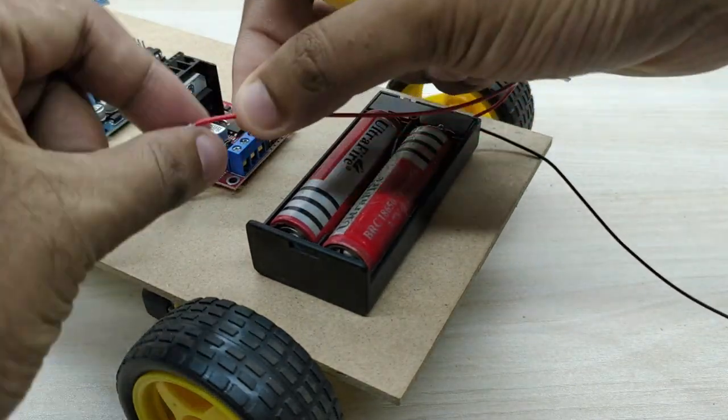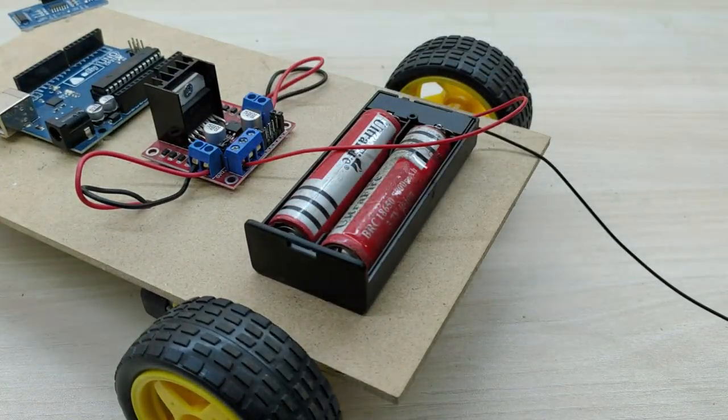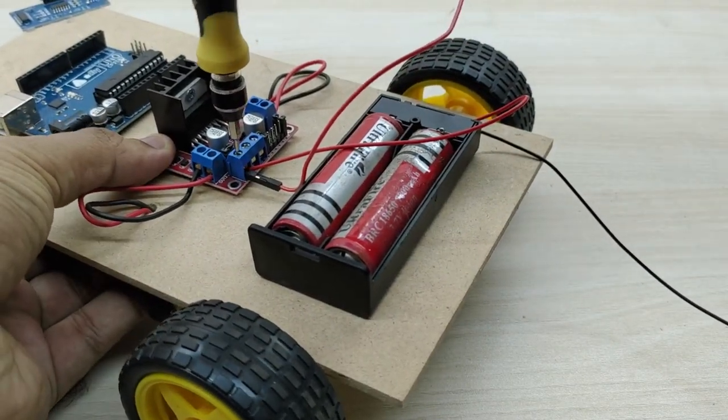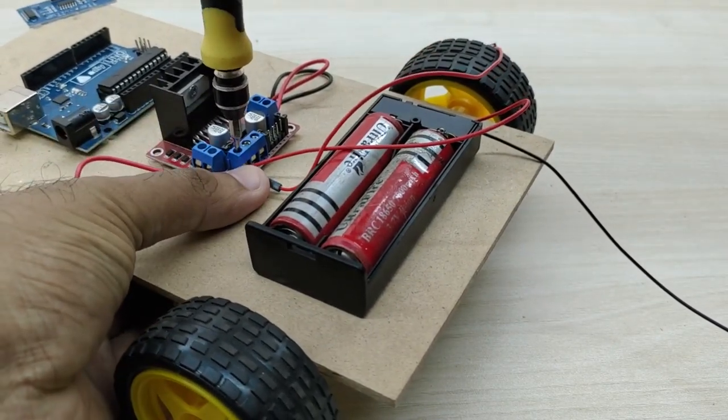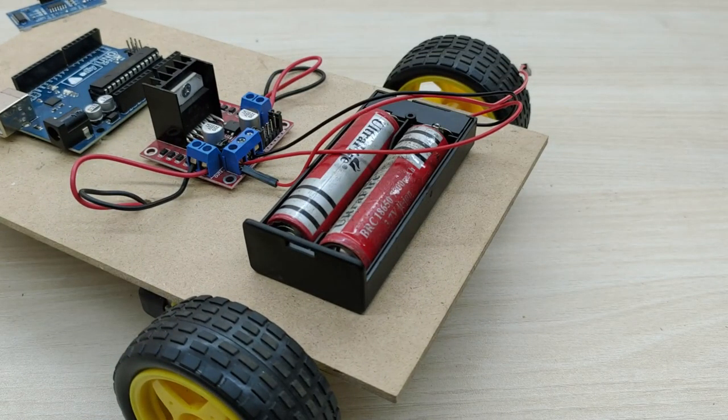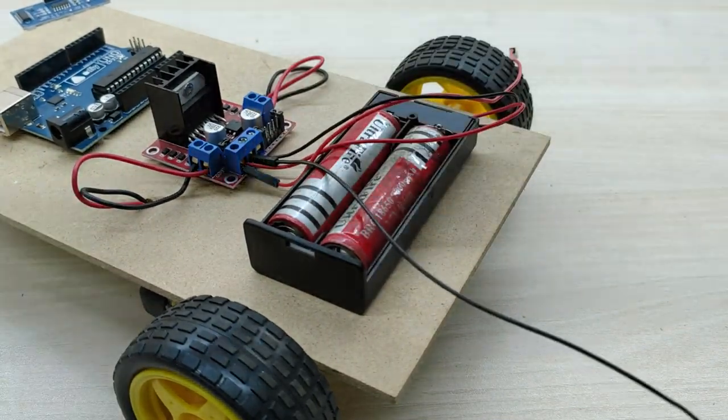Connect the positive terminal from the battery to the positive input terminal of the motor driver board and negative terminal from the battery to the ground terminal of the motor driver board. Connect two jumper wires also along with it, which will be required for powering the Arduino board.